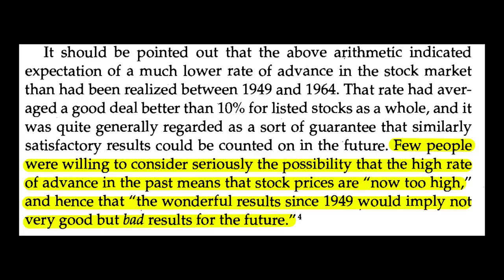Going back to page 23: 'Few people were willing to consider seriously the possibility that the high rate of advance in the past means that stock prices are now too high, and hence that the wonderful results since 1949 would imply not very good, but bad results in the future.' From 1949 to about 1969, the stock market ran absolutely crazy — it did something like a 6x in that 20-year period. People thought this high rate of advance would continue forever, not realizing that expensive prices now should imply lower future returns.